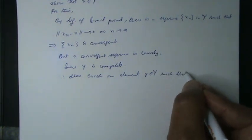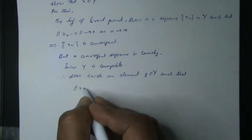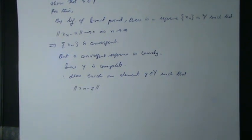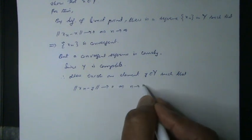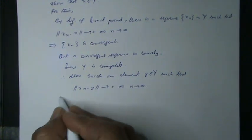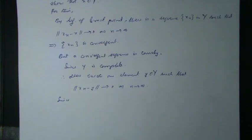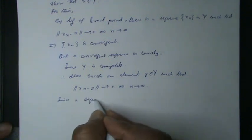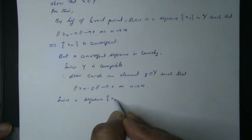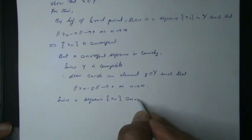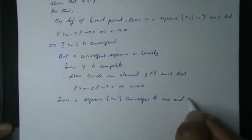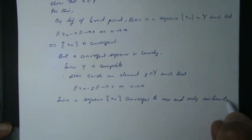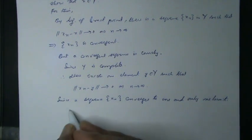||x_n - y|| also converges to 0 as n tends to infinity. Since a sequence x_n converges to one, only one limit, therefore